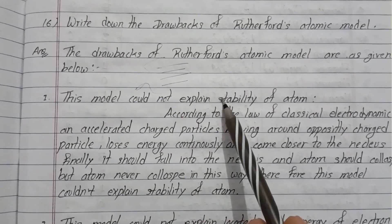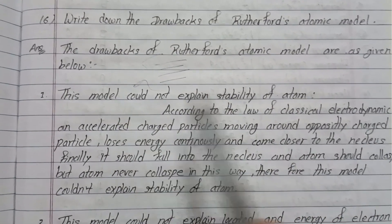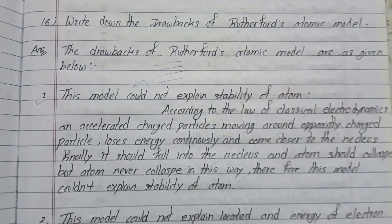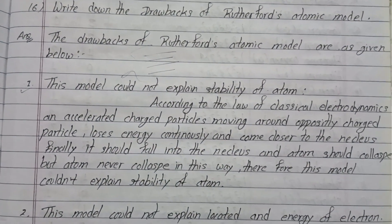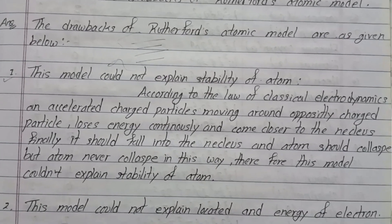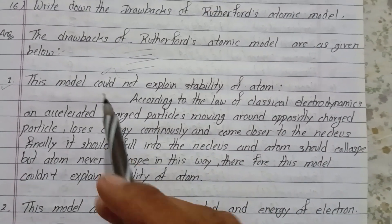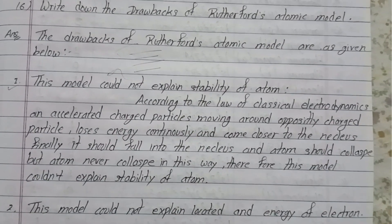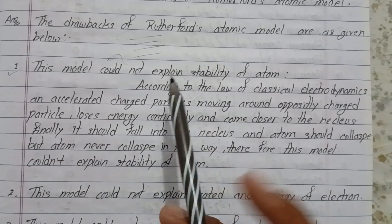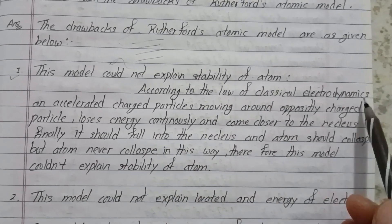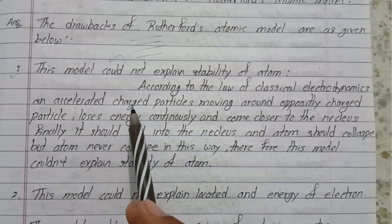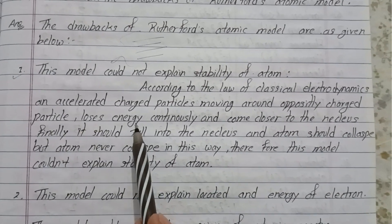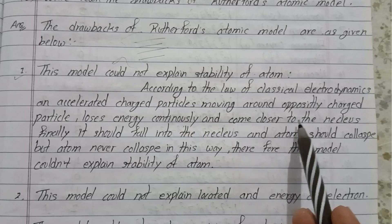This model could not explain the stability of atoms. According to the law of classical electrodynamics, an accelerated charged particle moving around an oppositely charged particle loses energy continuously and comes closer to the nucleus.